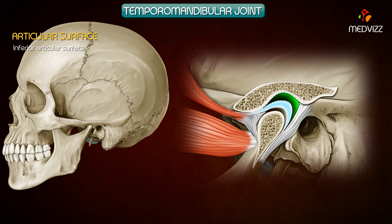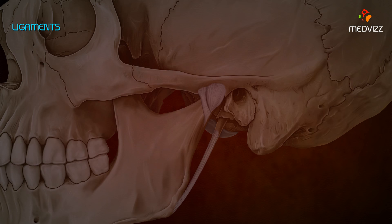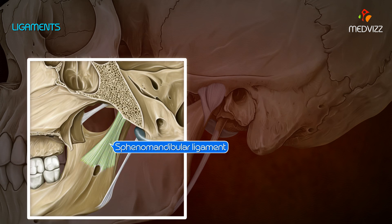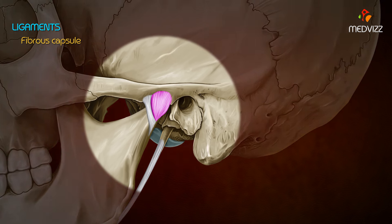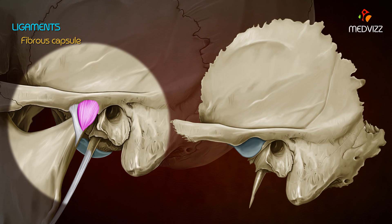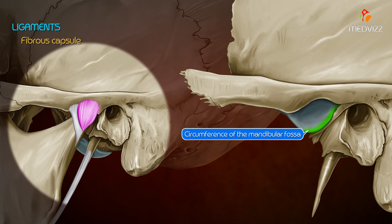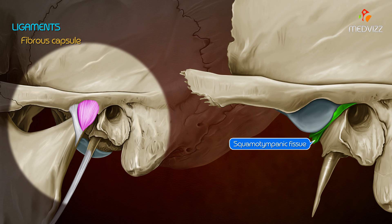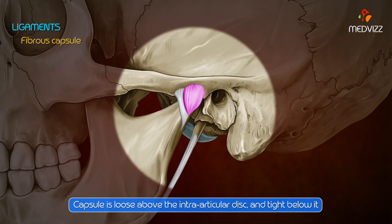The joint cavity is divided into upper and lower parts by the intra-articular disc. The ligaments present around the temporomandibular joint are the fibrous capsule, the lateral ligament, the spinomandibular ligament, and the stylomandibular ligament. The fibrous capsule is attached above to the articular tubercle, the circumference of the mandibular fossa in front, and the squamotympanic fissure behind, and below to the neck of the mandible. The capsule is loose above the intra-articular disc but tight below the disc.